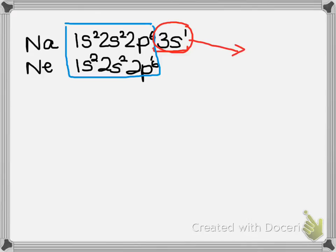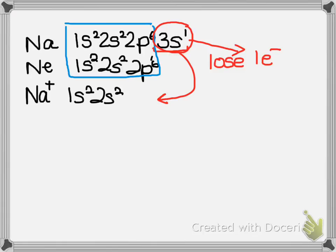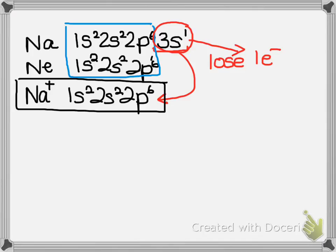When it loses that one electron, it's going to form a plus one ion. It's going to be 1s2 2s2 2p6 because it got rid of that last valence electron. So we would predict the ion sodium would form is Na+, a sodium ion.